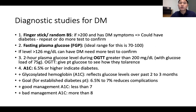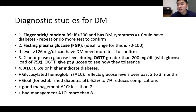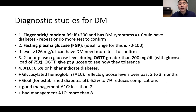Diabetes mellitus: know the diagnostic and confirmation tests. A random finger stick over 200 with diabetic symptoms could indicate diabetes but needs confirmation. Fasting plasma glucose: normal range is 70 to 100 when fasting 6 to 8 hours; if more than 126, may have diabetes mellitus — more tests required. Two-hour plasma glucose OGTT: if greater than 200 after a 75-gram glucose load, suspect diabetes.